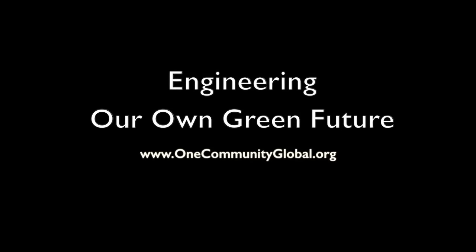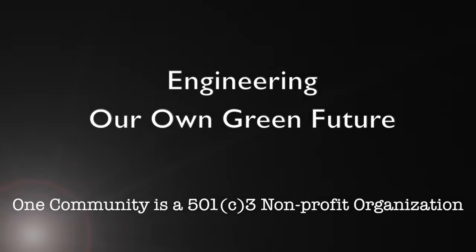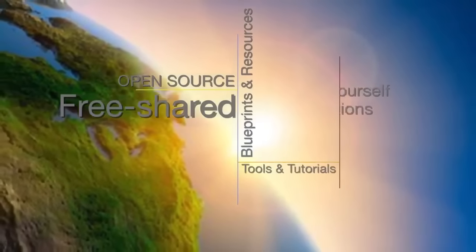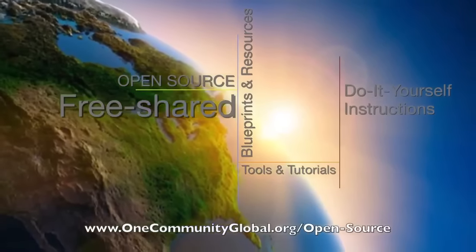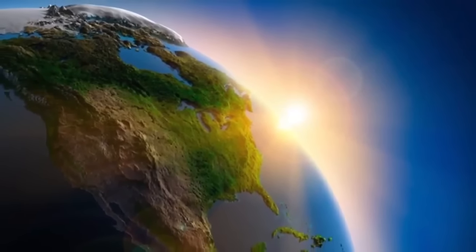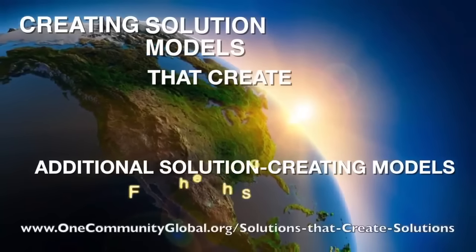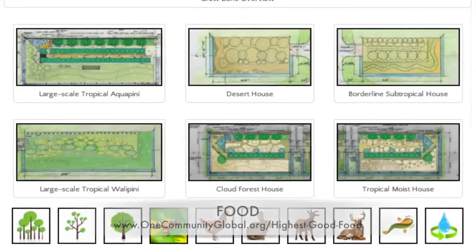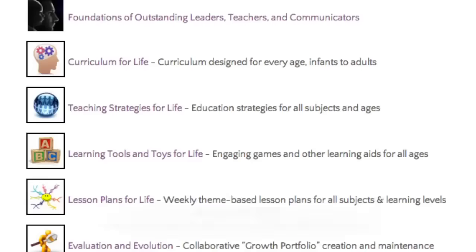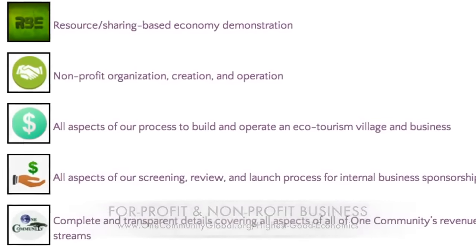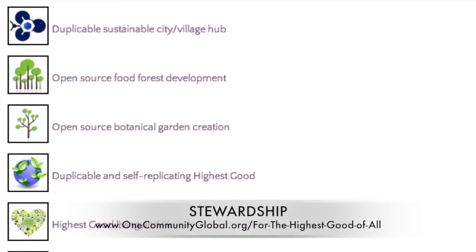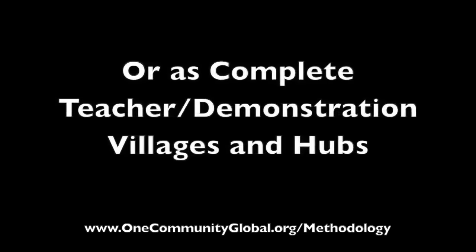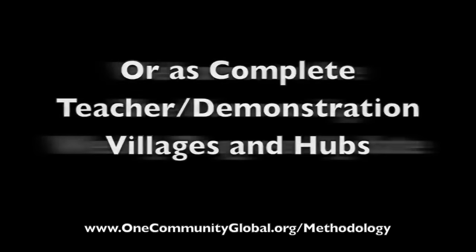Engineering our own green future — One Community weekly progress update number 116. One Community is a 501c3 nonprofit organization creating open source and free shared blueprints, resources, tools, tutorials, and do-it-yourself instructions for highest good living, creating solution models that create additional solution-creating models in the service of all life on this planet, covering highest good approaches to food, energy, housing, education, for-profit and nonprofit business creation, society, and true earth stewardship — implementable as individual components or as complete teacher demonstration villages and hubs.